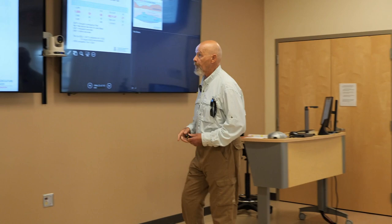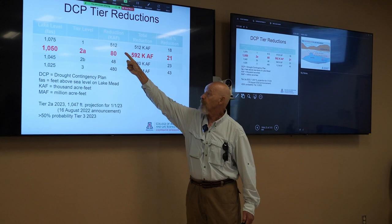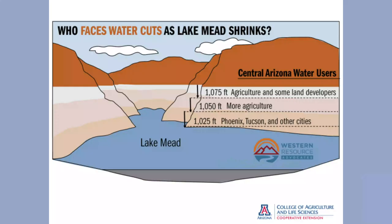Looking at lower basin states — Arizona, Nevada, California, and Mexico — Arizona is carrying the load in water reductions: 592,000 acre-feet total. Nevada has put in 25,000, California none, and Mexico 104,000. All of the reductions are coming out of Central Arizona CAP allocations — primarily Pinal County irrigation districts — which are now pretty much cut off from all their CAP water and forced back to groundwater. Yuma area agriculture has not lost any water yet.